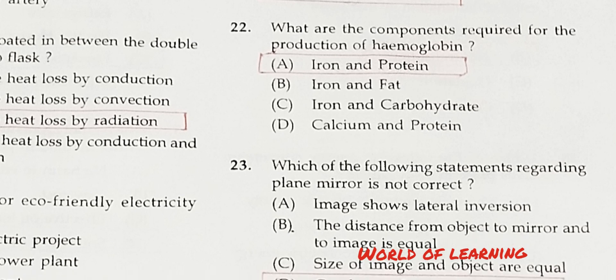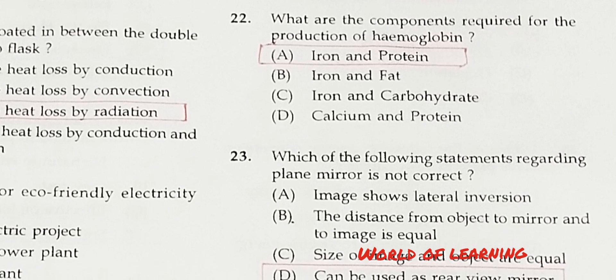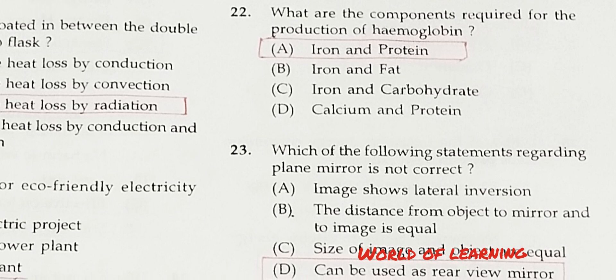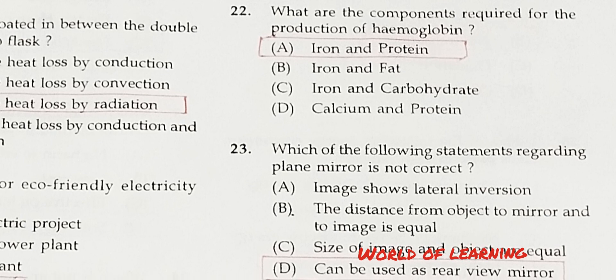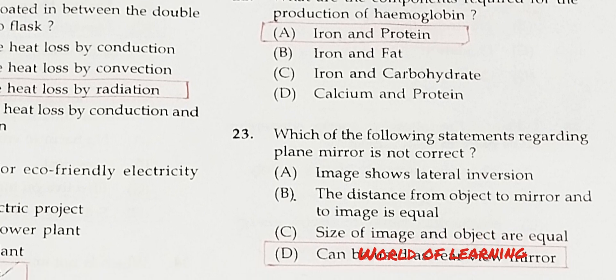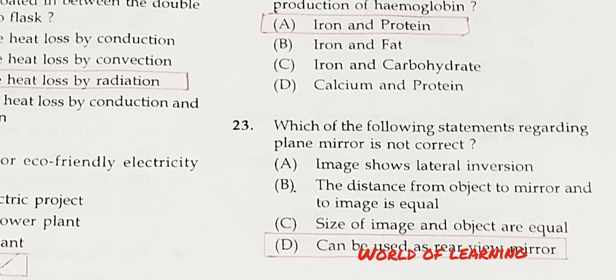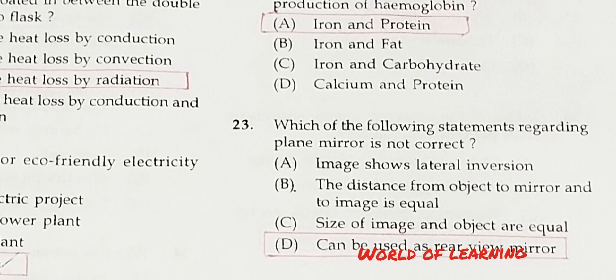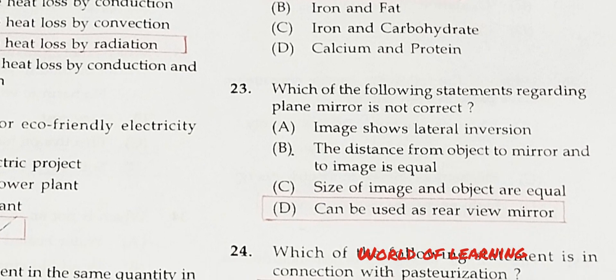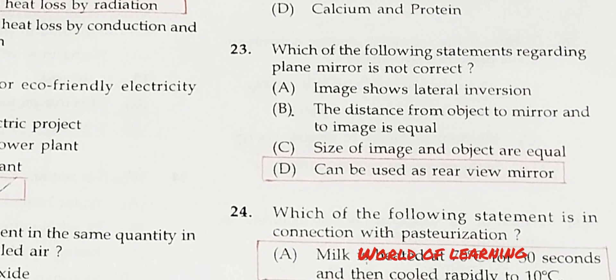Question 22: What are the components required for the production of hemoglobin? Option A: Iron and protein. Option B: Iron and fat. Option C: Iron and carbohydrate. Option D: Calcium and protein. Correct answer is Option A, iron and protein.